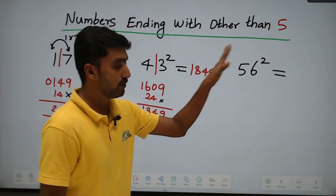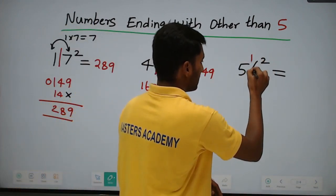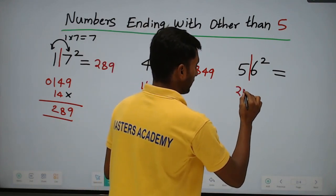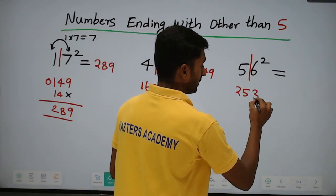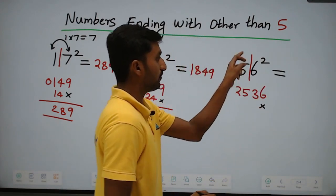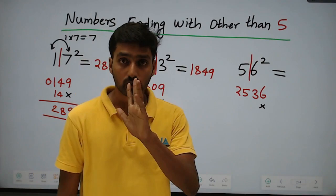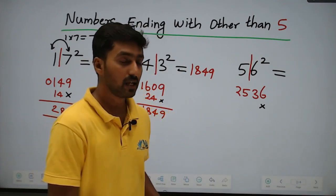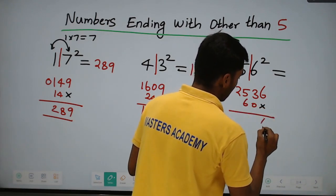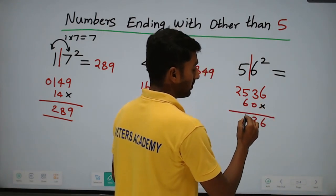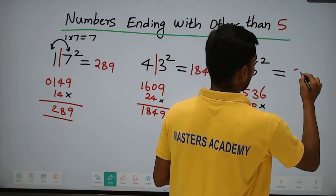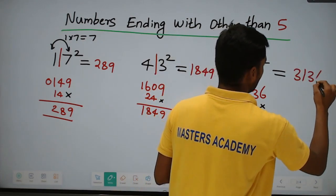Now 56 squared. Split the digits: 5 squared equals 25, and 6 squared equals 36. Multiply: 5 into 6 equals 30, double it to get 60. Adding: 6, then 5 plus 6 equals 11 — write 1 carry 1, so 3 plus 1 is 4 — giving 3136. So 56 squared equals 3136.